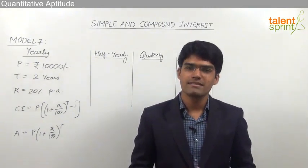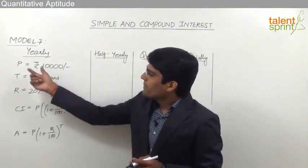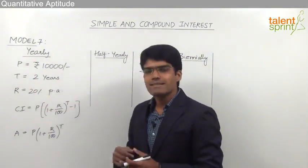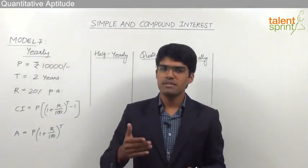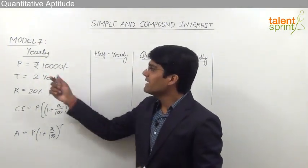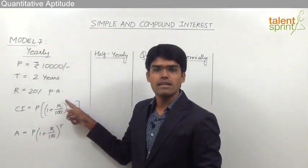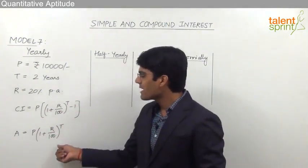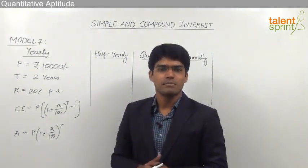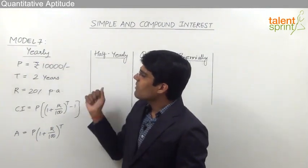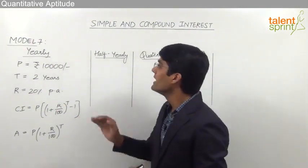Let us understand how to do calculations related to compound interest in these special cases with a simple example. Let the principal be Rs. 10,000, time period 2 years, and rate of interest 20% per annum. For yearly compounding we can directly use the formula: Compound Interest = P(1 + R/100)^T − 1, or we can use the net or effective percentage concept A + B + AB/100. But what to do in case of half yearly compounding?